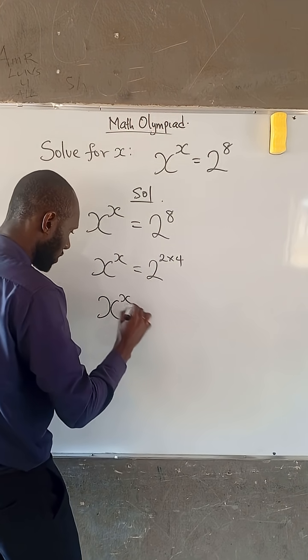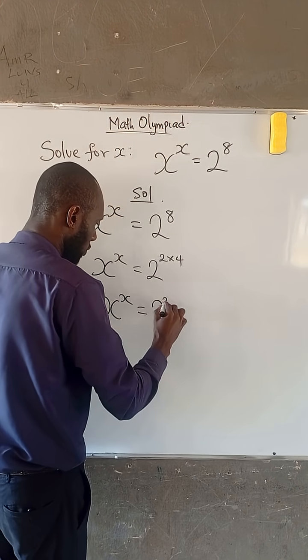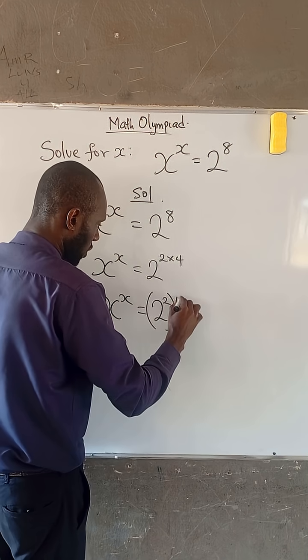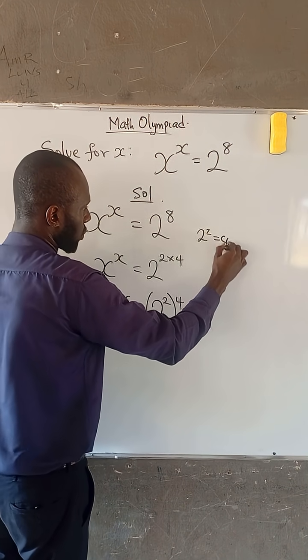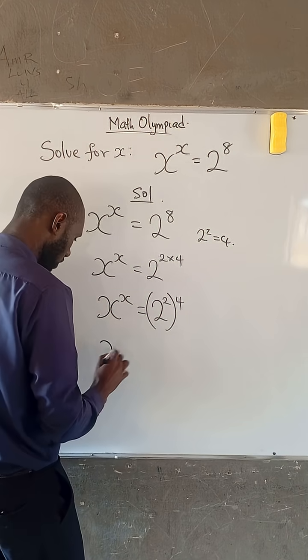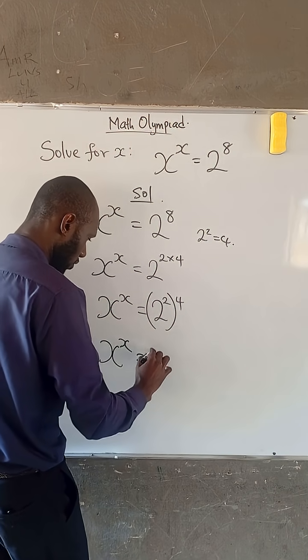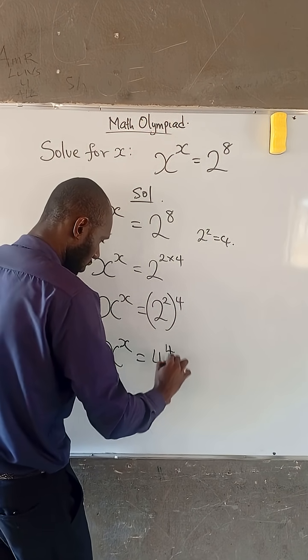So, x to the power of x equals 2 to the power of 2, all to the power of 4. And 2 to the power of 2 is equal to 4. Therefore, x to the power of x equals 4 to the power of 4.